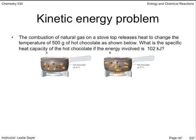Here's another problem. The combustion of natural gas on a stovetop releases heat to change the temperature of 500 grams of hot chocolate. What is the specific heat capacity of the hot chocolate if the energy involved is 102 kilojoules? The energy released by the combustion of natural gas increases the temperature of the surroundings — some heats the air, some heats the pan, and some heats the hot chocolate. We are only considering the energy used to change the temperature of the hot chocolate by 50 degrees Celsius.